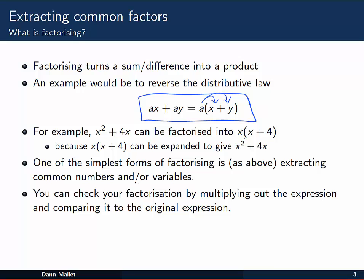We can factor that into x outside of x plus 4. And that's because if we start with x times x plus 4, we can expand that to give x squared plus 4x, using the distribution idea. So it works in reverse.